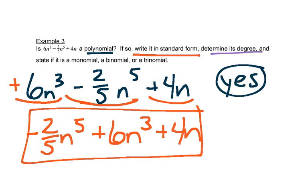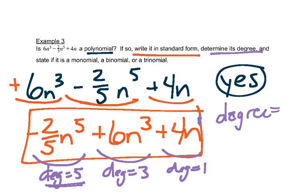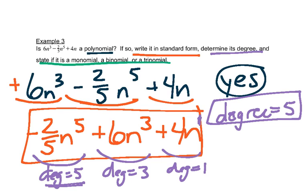Then it says determine its degree. The degree of the first term is 5, the degree of the second term is 3, and the degree of the third term is 1 because there's no written exponent. So the degree of the polynomial is the biggest of those degrees, which is 5. Finally, it asks whether it's a monomial, binomial, or trinomial. This has three terms, which means it's called, more specifically, a trinomial.